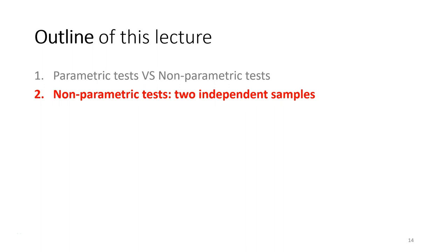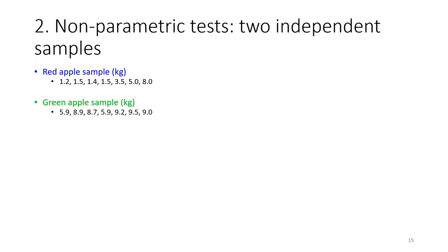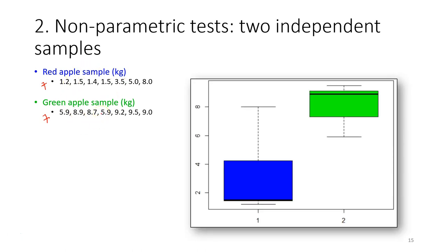For this week, the first non-parametric test you are going to learn is a test for the differences between two independent samples. We use the example of comparing the weight of two types of apple: red apple and green apple. For each type, I assembled a total of seven apples from the market and measured the weight of each apple in grams. This is my experiment design.